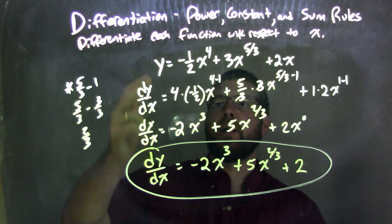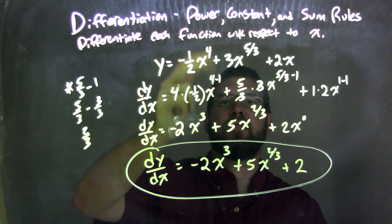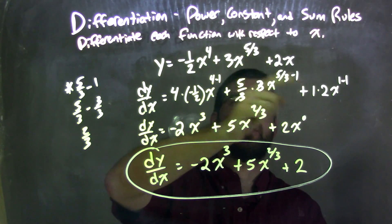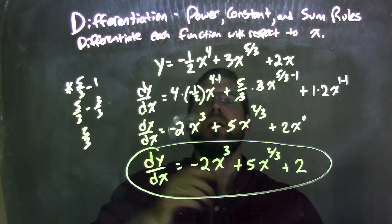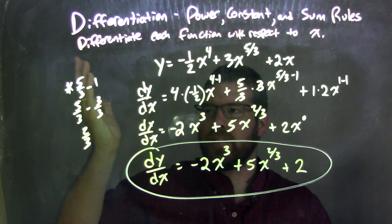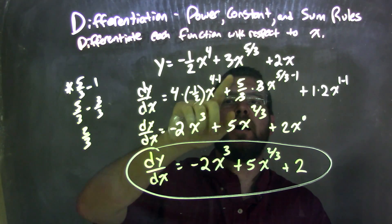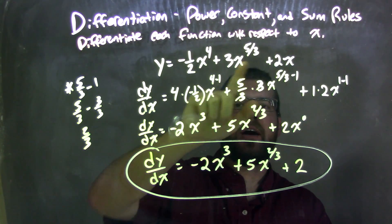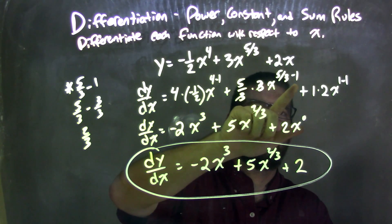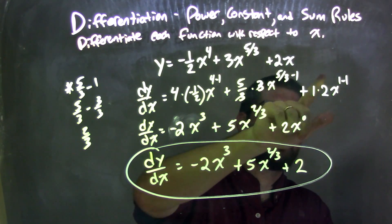So let's recap. We're given y equals negative one-half x to the fourth, plus three x to the five-thirds plus two x. By deriving it, it's the power rule. Four came out front, and then I subtract the exponent by one, same thing, five-thirds came out front for that part, subtract the exponent by one, the one came out front, subtract the exponent by one.